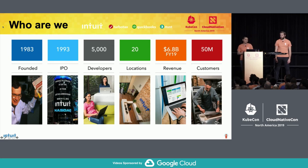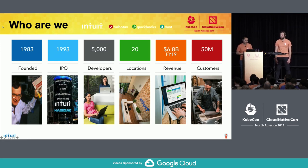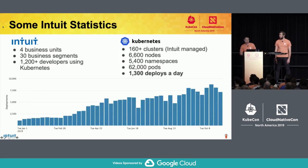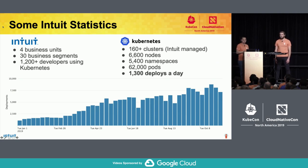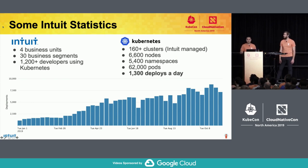Intuit is the company behind TurboTax, QuickBooks, and Mint. About two years ago, Intuit started its journey onto Kubernetes, and it's been really successful. We've gone all in on Kubernetes. Within Intuit, we have about 5,000 developers, and about a quarter of them have been migrated onto Kubernetes. One of the biggest things Kubernetes enabled for us was increasing our software delivery speed. Currently, we're doing about 1,300 deployments per day using Argo CD, our GitOps-based continuous delivery tool.